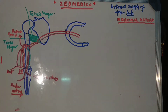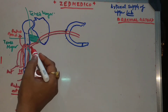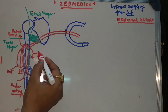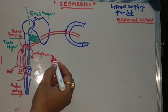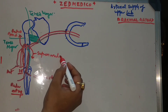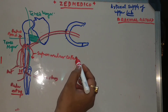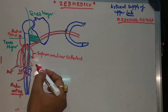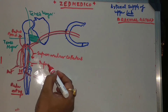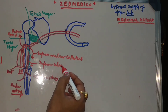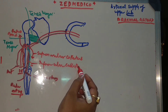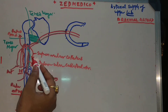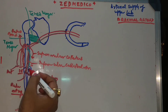The brachial artery gives off the superior ulnar collateral artery and the inferior ulnar collateral artery. All these arteries descend down, come around the elbow, and form anastomosis around the elbow joint.